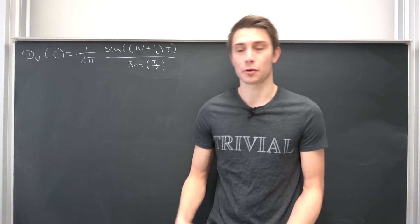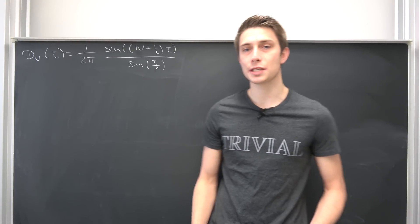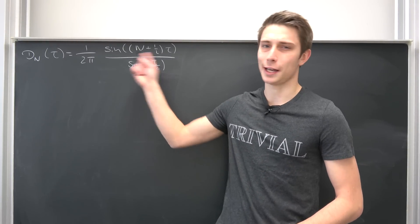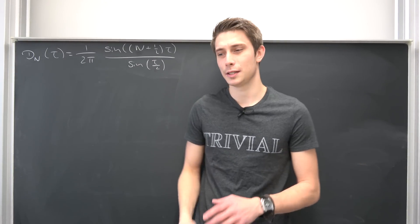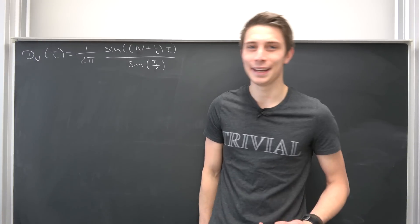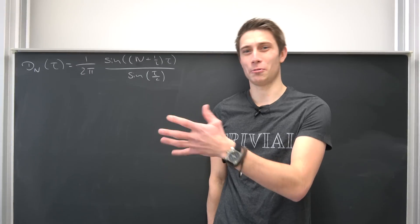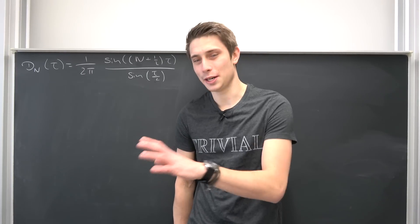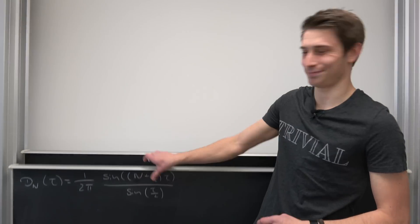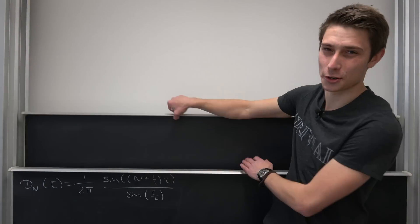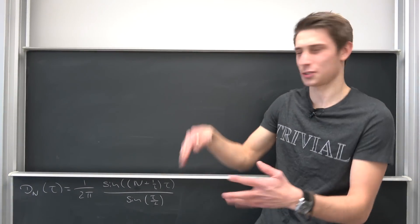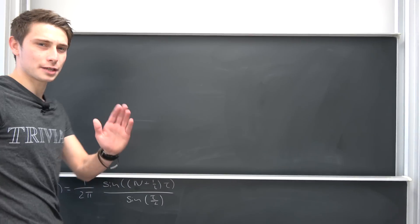To derive the Fejer kernel, we are going to do it recursively. In this process we are going to manipulate this right here a little bit using a pretty ugly bunch of addition theorems. It's really an absolute mindfuck. It's not too cool to derive, but we're just going to do it like that.